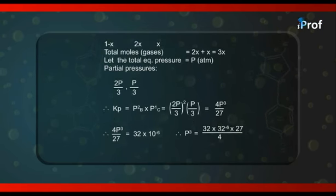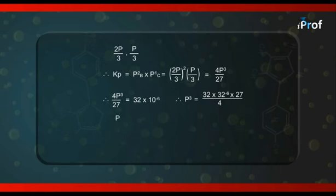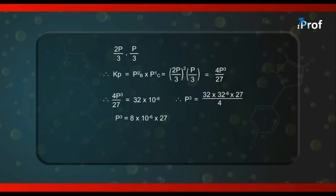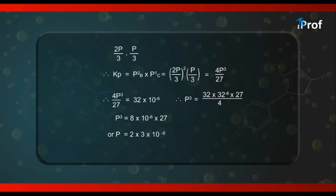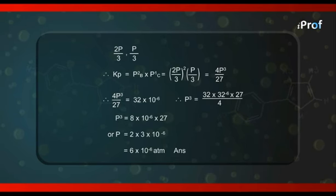Or P cube is equal to 8 into 10 to the power minus 6 into 27 or P equal to 2 into 3 into 10 to the power minus 6 that is 6 into 10 to the power minus 6 atmosphere that becomes the answer of the question.